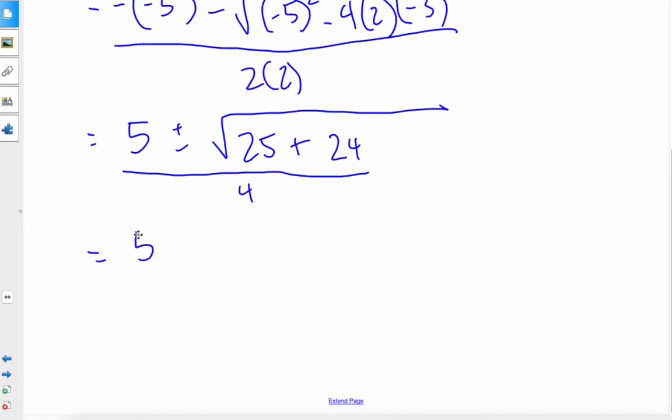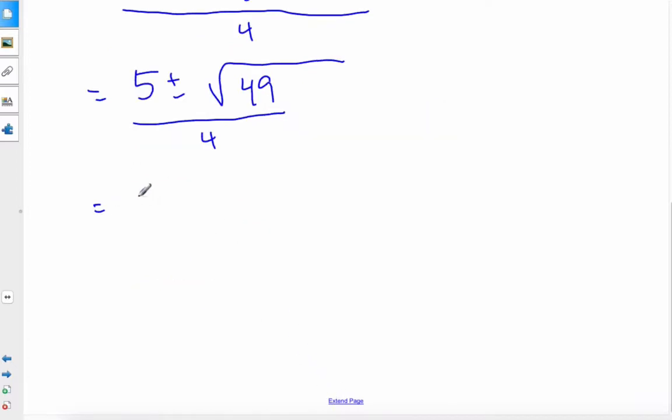Continuing to simplify in the square root first, because we do this first, that's going to be 49 over 4. Well, I like 49 because 49 square rooted is exactly 7 over 4.